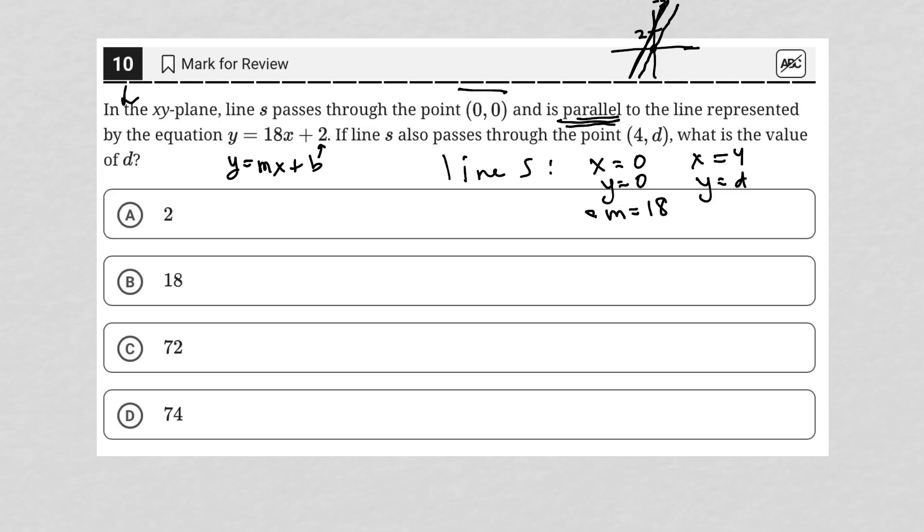Alright, so this is all we need. Desmos is not required. I know that line s has a slope of 18 because it's parallel to this equation, and that's really all I need. How do we find slope?